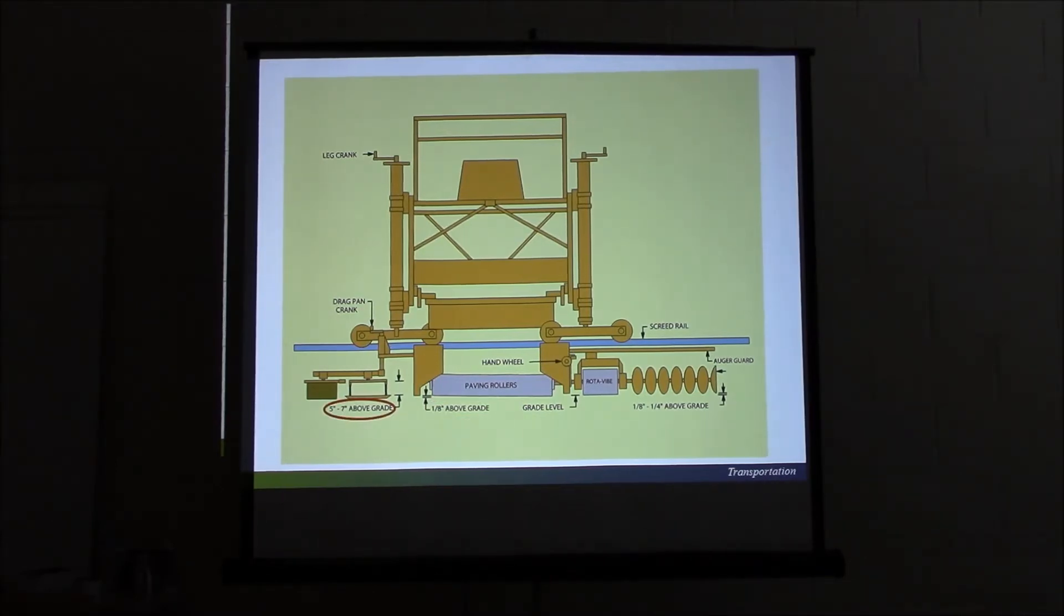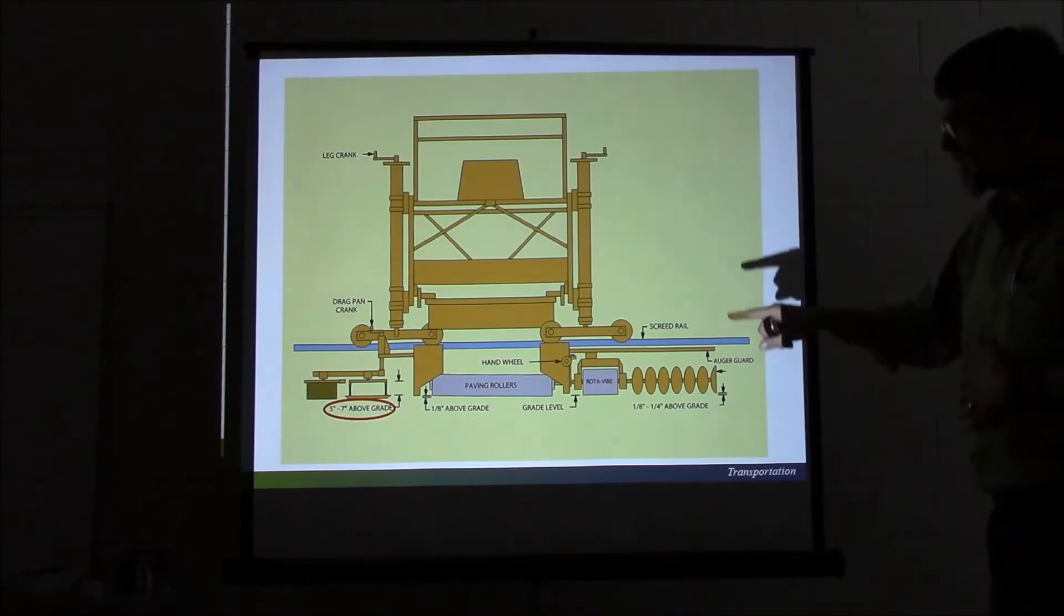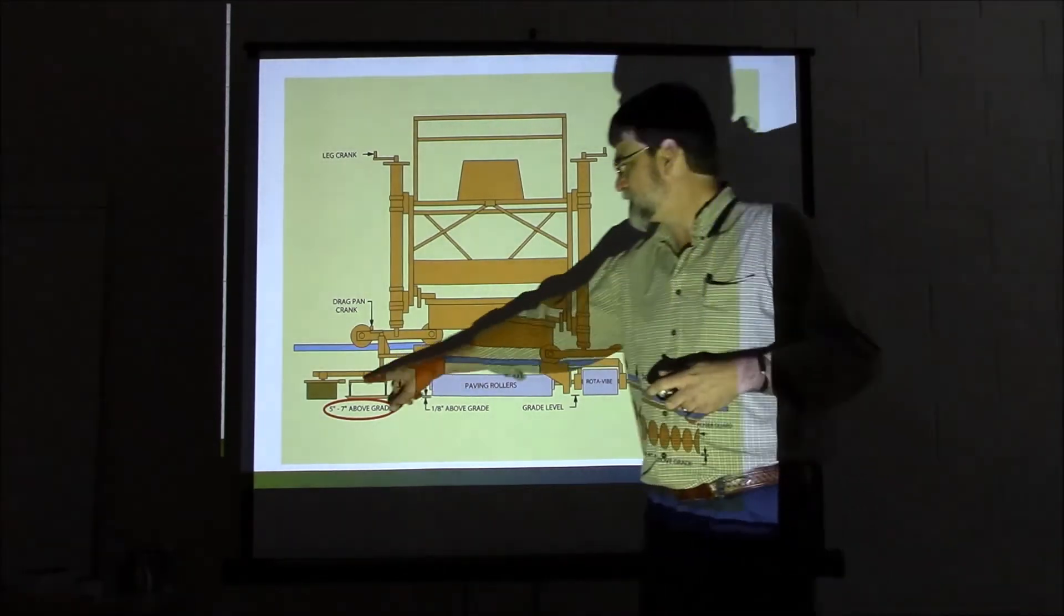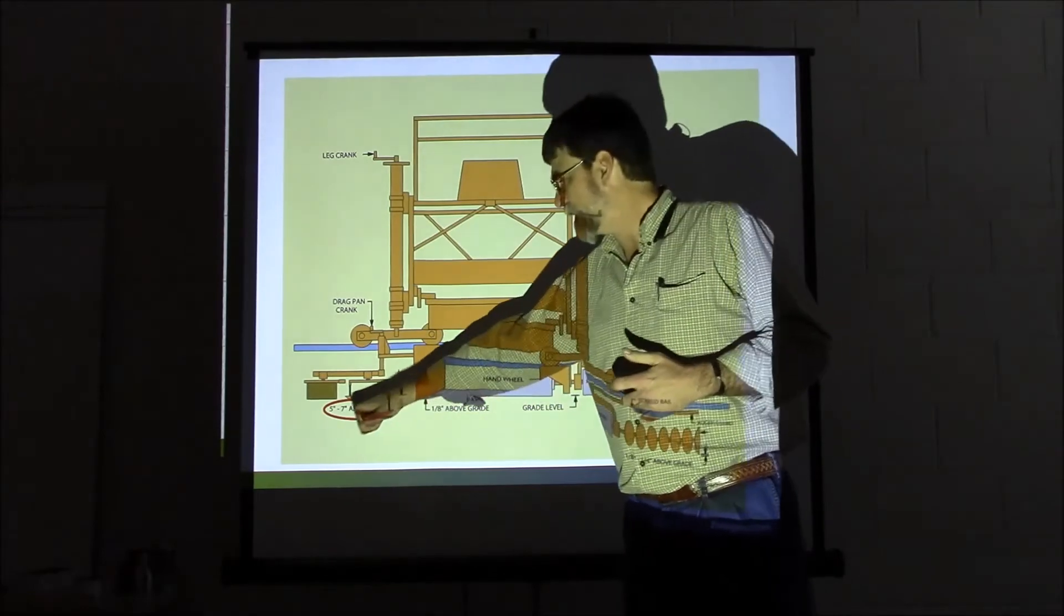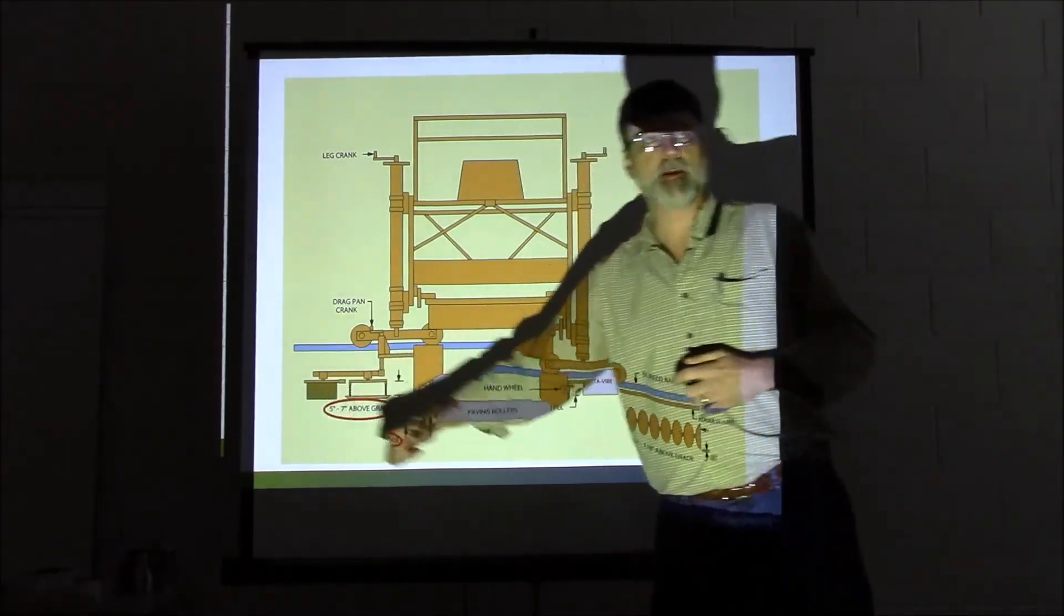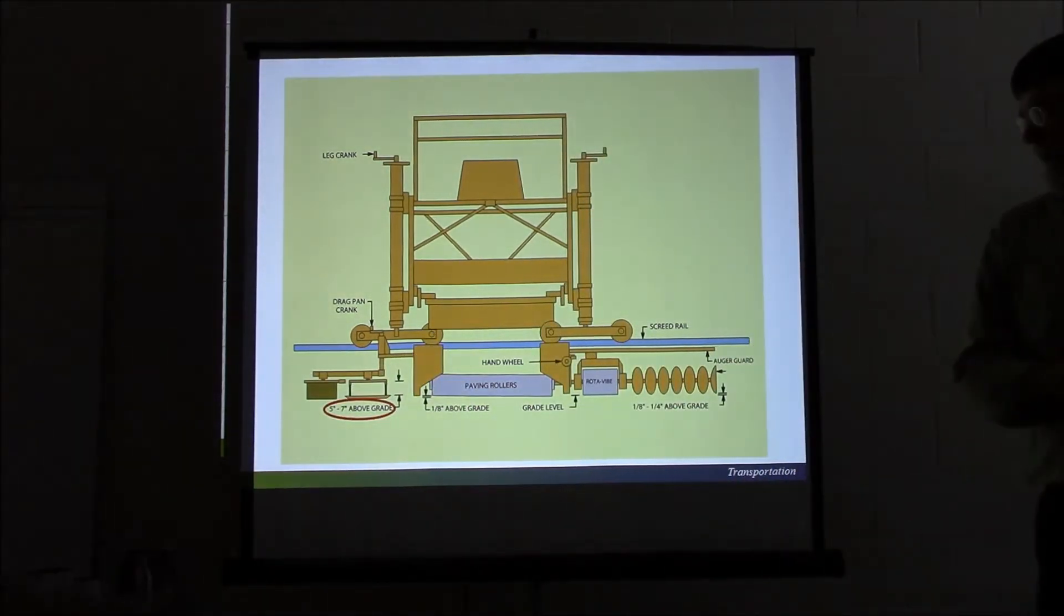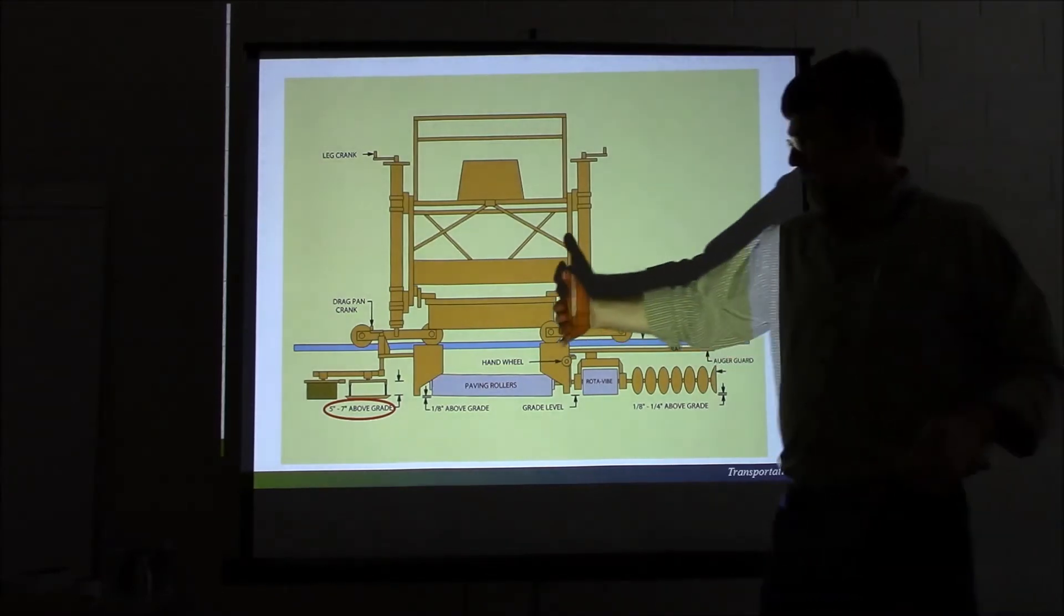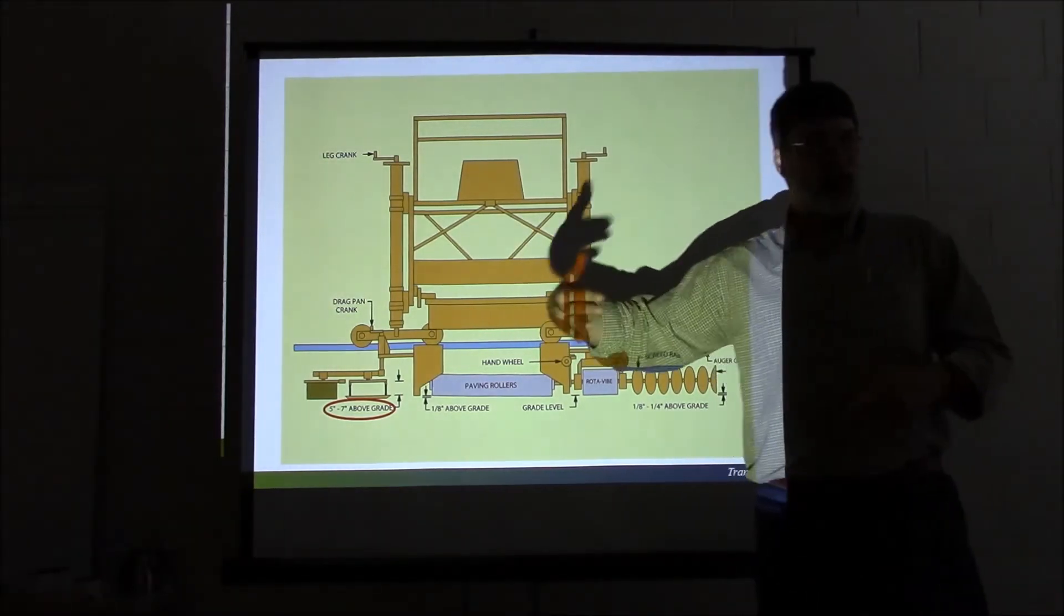This part right here, your drag pans, they're hanging from chains off this frame. The only thing I really want you to remember about that is the bars that these chains slide back and forth on should be facing in and out of the screen right here. And if you turn them the other way, I've seen some bad things happen. You've got about a 50-50 chance whoever grabs that thing sets it out there to put it on the machine. Whichever way they lay it down is the way they hook it up. But what we want to see is the bars are going with the direction of travel of the boat.